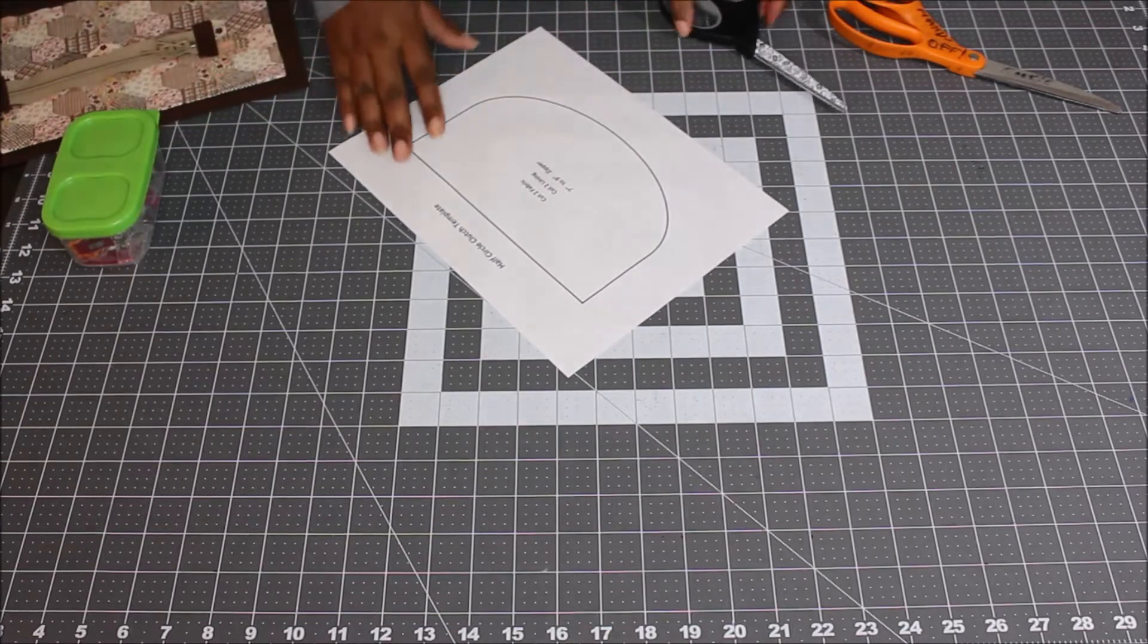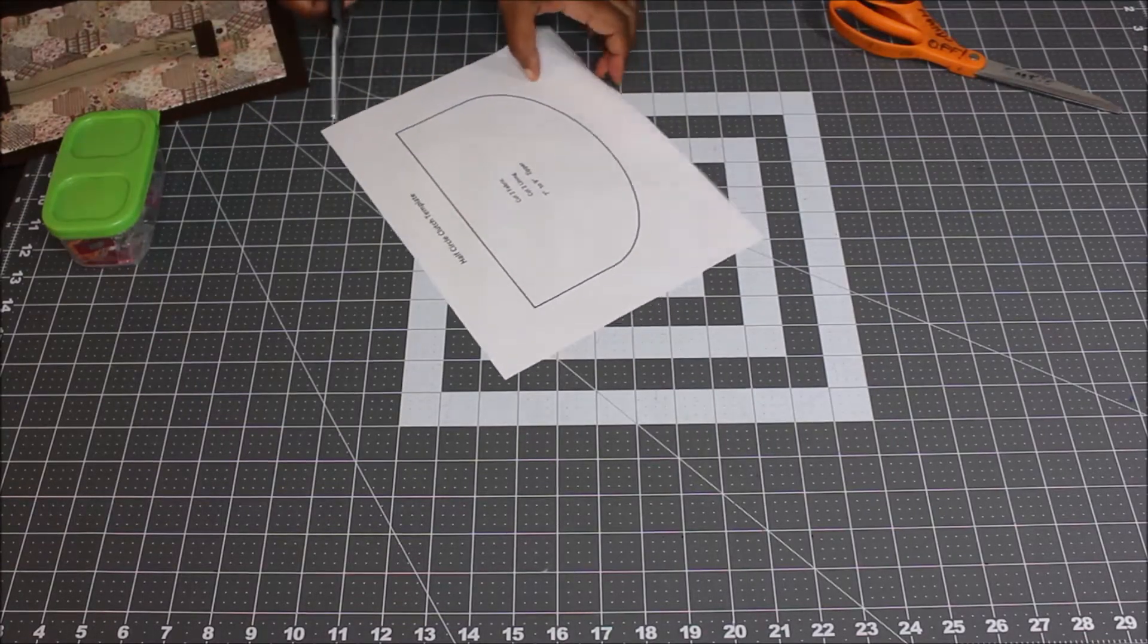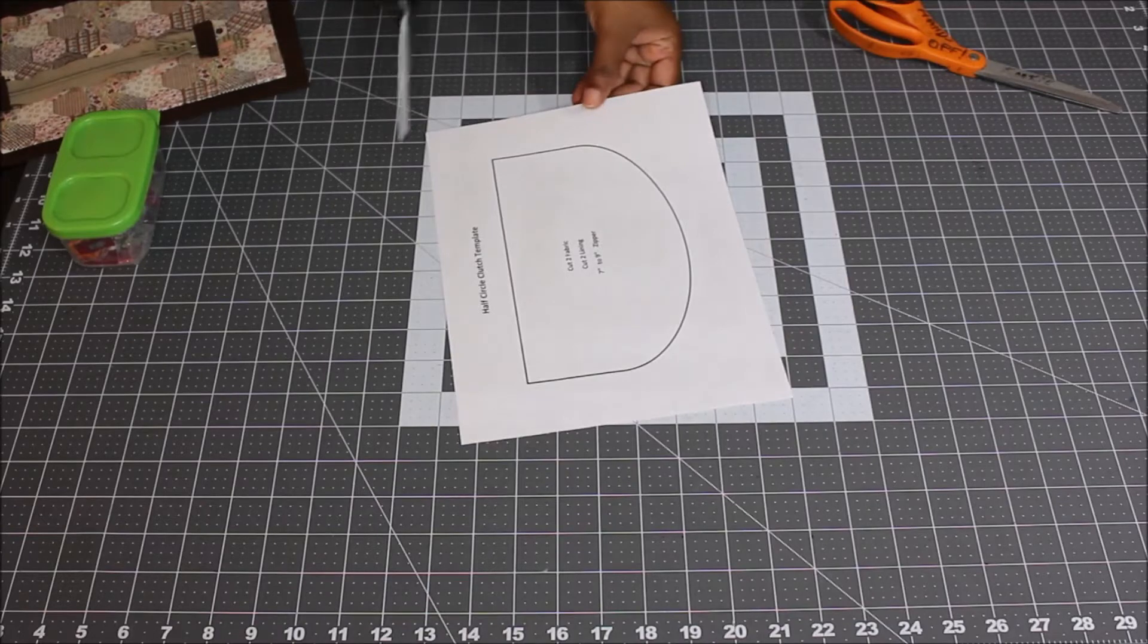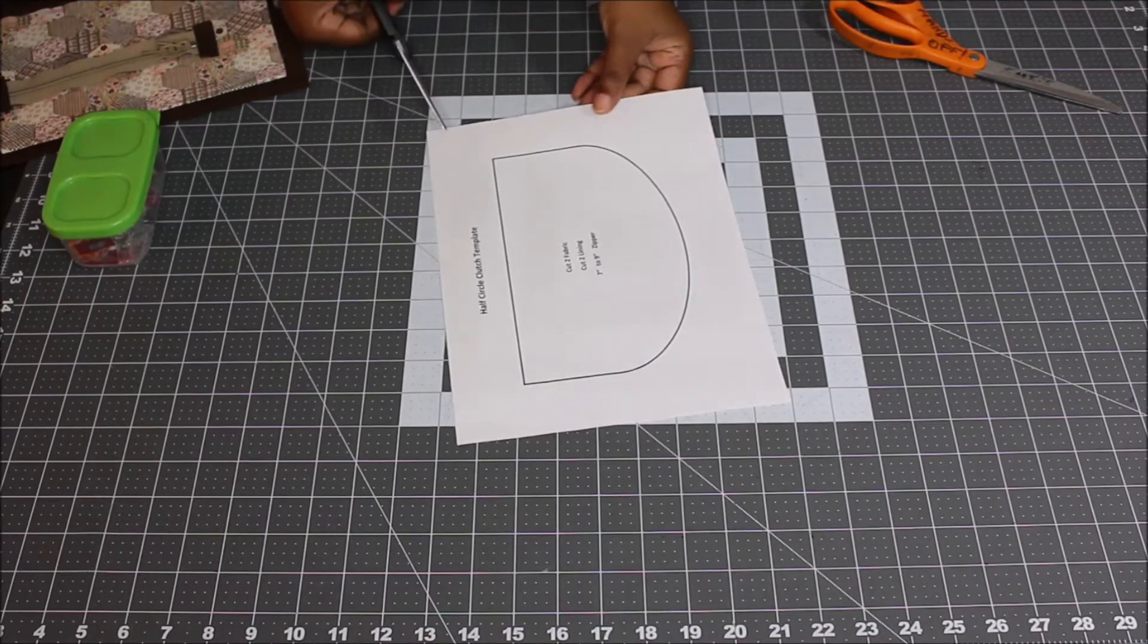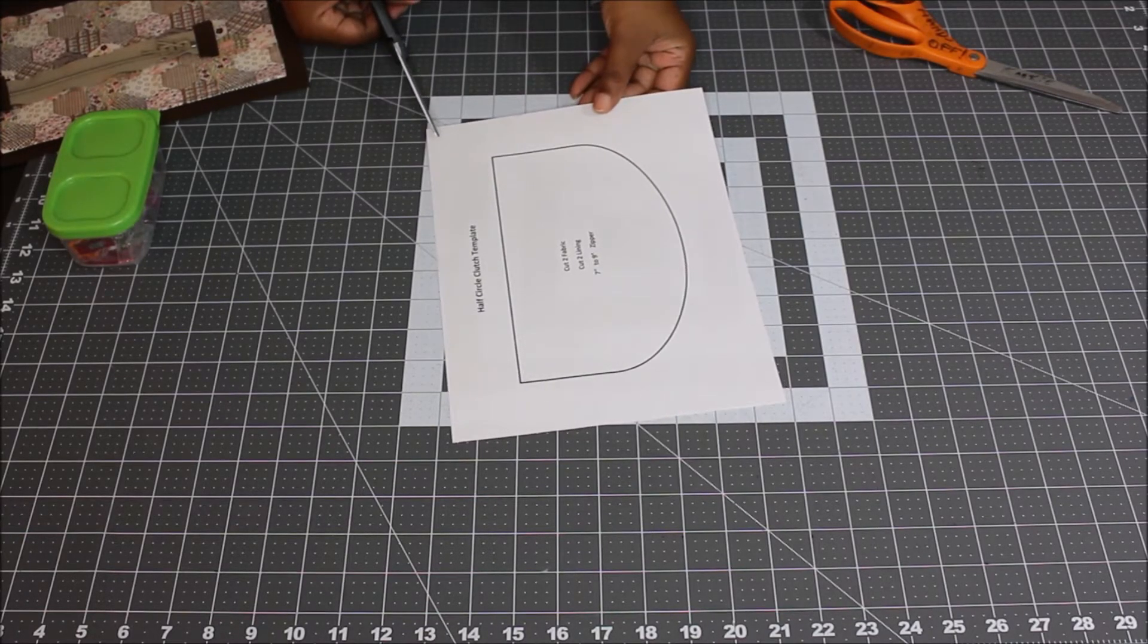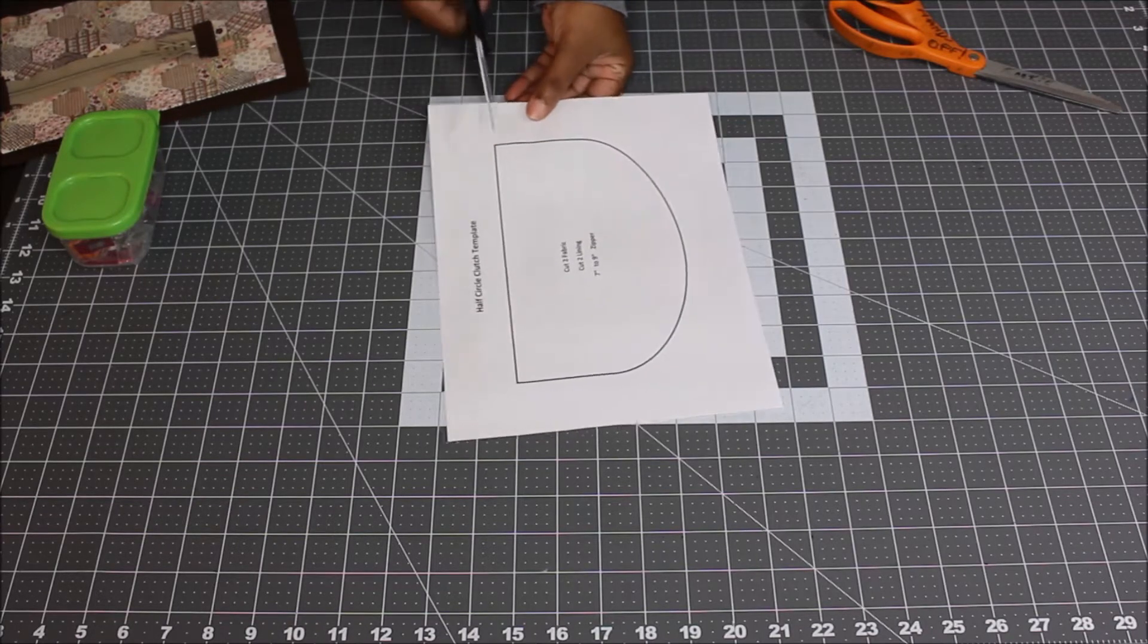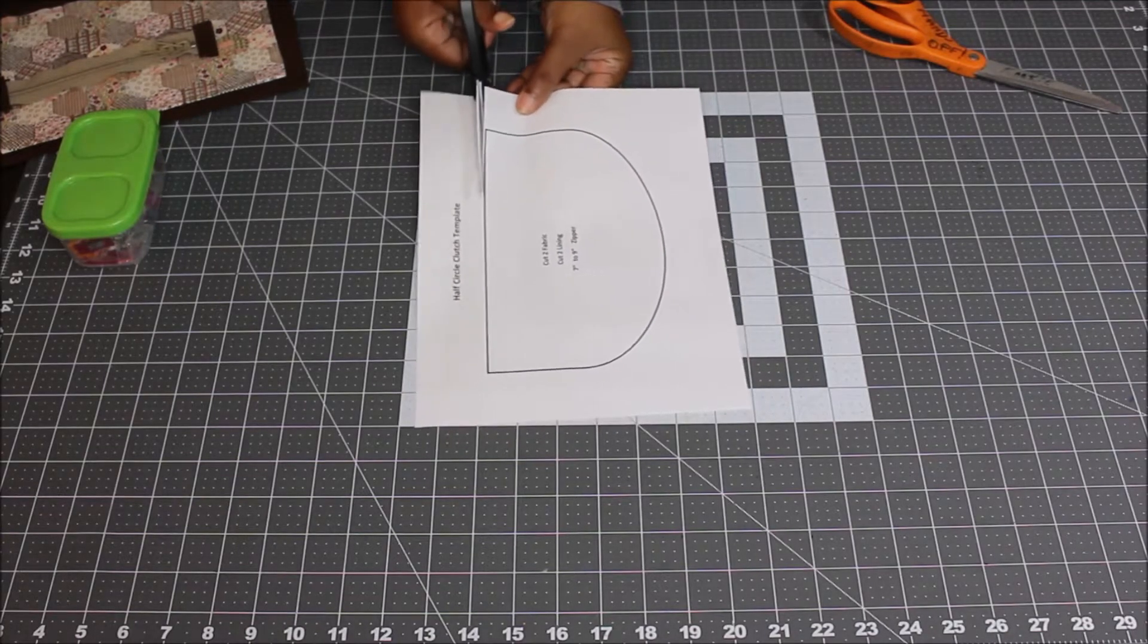The first thing you want to do is take your template and your paper scissors and just cut around that solid line.